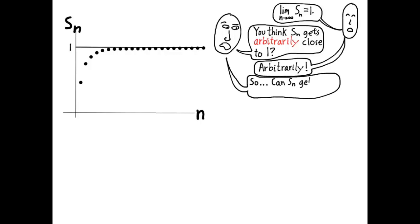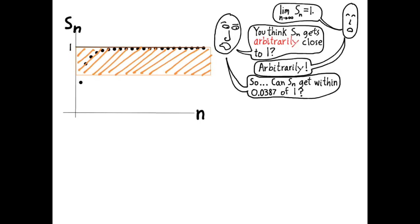so, can S sub N get within 0.0387 of 1? He picks some very small number, 0.0387. And that number is the width of this envelope here. He says, if I pick this number for epsilon, are you telling me that the sequence really gets within that number of 1? And the first guy says, sure.